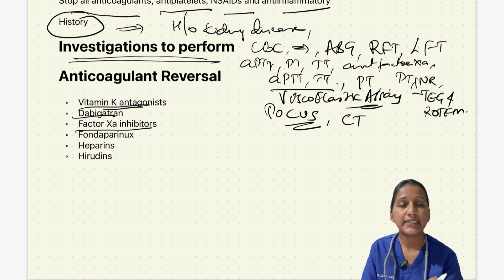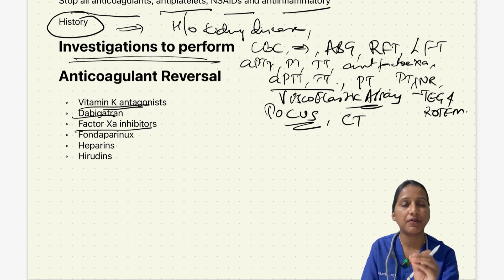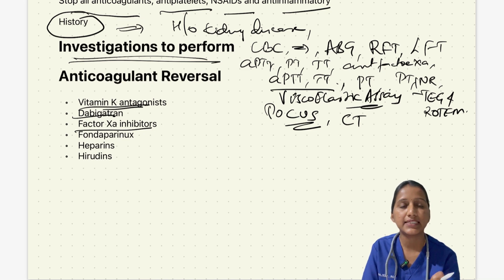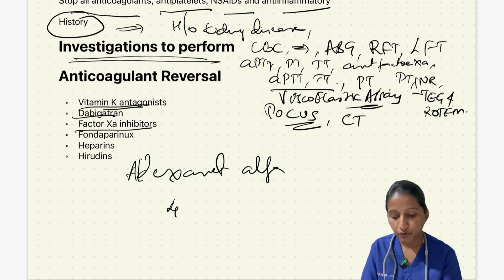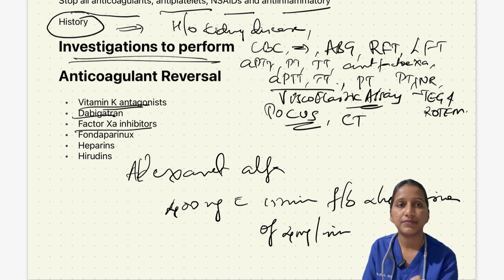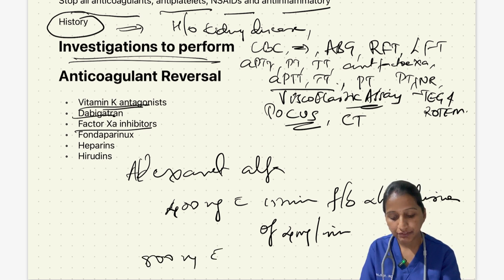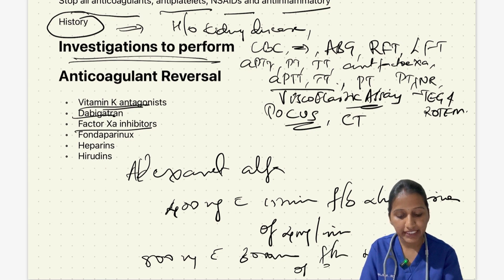For factor Xa inhibitors, andexanet alfa is effective. It is a modified human factor Xa protein that binds with high affinity to factor Xa inhibitors, inactivating their effect. Dosing depends on timing and dose: if taken more than 8 hours ago and low dose (rivaroxaban <10 mg, apixaban <5 mg), give 400 mg over 15 minutes followed by 2-hour infusion at 4 mg/min. If taken within 8 hours and high dose, give 800 mg over 30 minutes followed by 2-hour infusion at 8 mg/min.